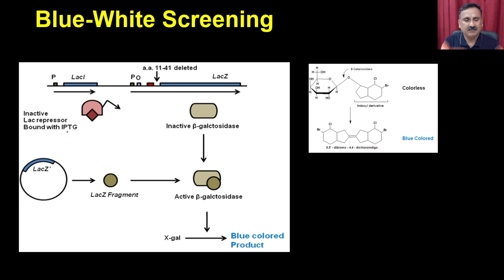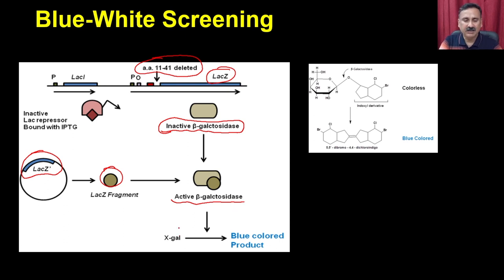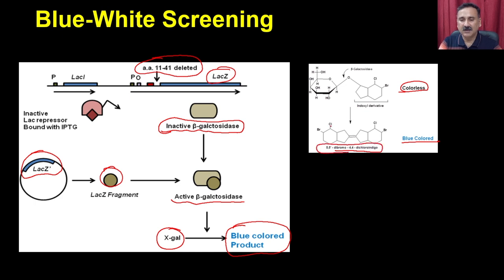Beta-galactosidase is expressed from the lac operon. What you have is a lacZ which has a missing region (amino acids 11–41). If you express that, it gives an inactive beta-galactosidase, whereas this missing region is present on the vector, which can be called lacZ prime. So when this lacZ fragment combines with the inactive beta-galactosidase, it gives you the active beta-galactosidase, and this active enzyme converts X-gal — the colorless product — into a blue-colored product: 5,5'-dibromo-4,4'-dichloroindigo.